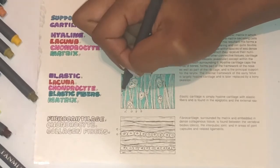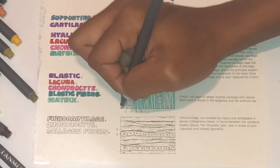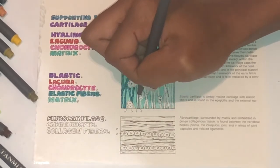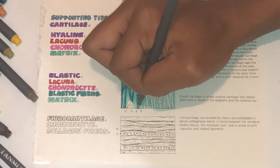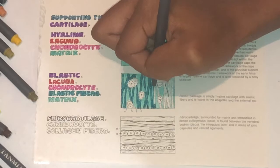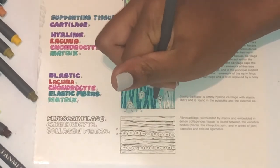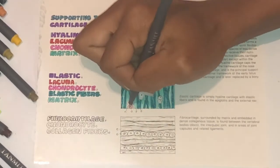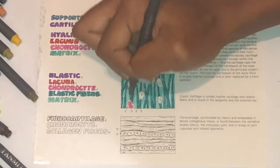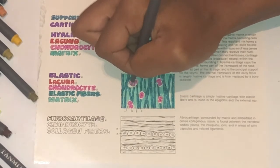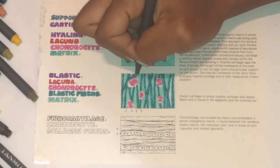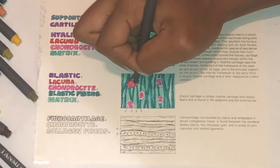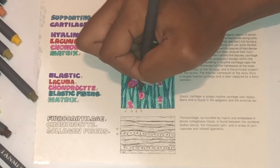And now I'm coloring in the elastic fibers, and now the chondrocyte, which is that pink color, and then we're going to go ahead and color in the lacuna which is a red color.